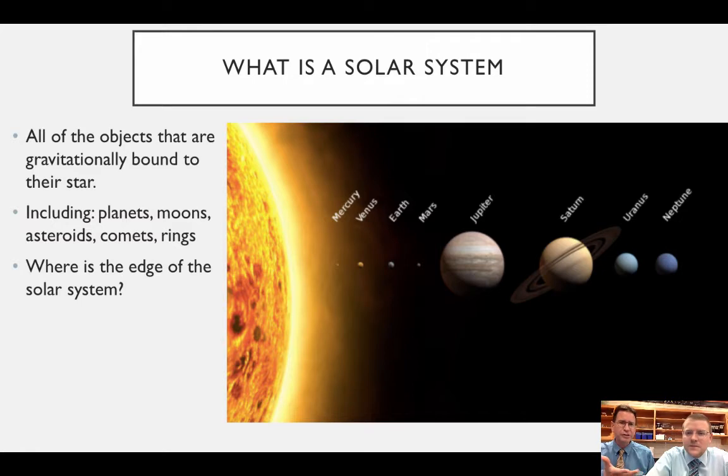There are other things in the solar system too that are under that same gravitational pull. Asteroids, comets, any of those things are all gravitationally bound basically to this system. And so for us, when you were growing up back in ancient times, what was the edge of the solar system?